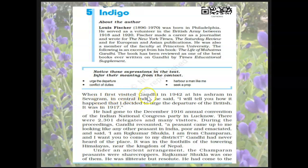When Fischer visited Gandhi first in 1942 at his ashram in Sevagram in central India, Gandhi said: 'I will tell you how it happened that I decided to urge the departure of the British. It was in 1917.' So the first 'I' refers to Louis Fischer, and the second 'I' refers to Gandhi. Gandhi had gone to the December 1916 annual convention of the Indian National Congress Party in Lucknow. There were 2,301 delegates and many visitors.